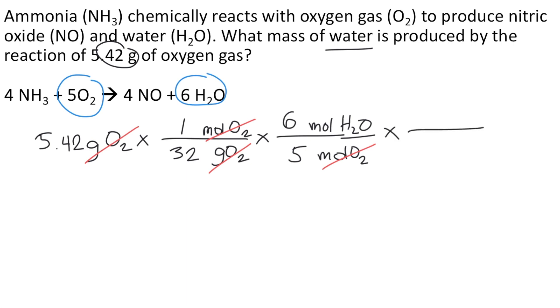And then finally, you convert the moles of H2O to grams of H2O because the problem is asking for the mass. So we need now the molar mass of H2O. One mole of H2O, the molar mass is 18.016. So the moles of H2O will cancel. Now this gives us the grams of H2O.